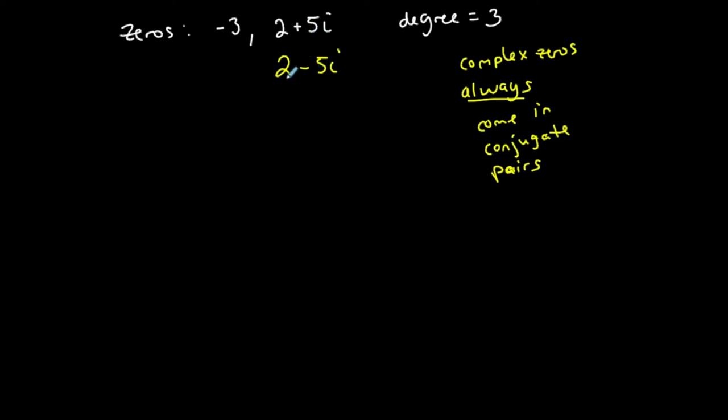I was given the zero negative three and two plus five i. Automatically, because this is a complex zero, two minus five i is also a zero, and now I have three zeros for my third degree polynomial.